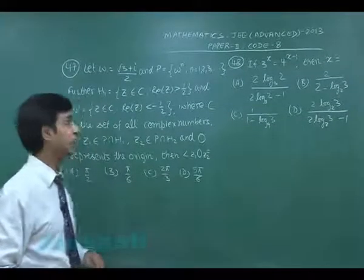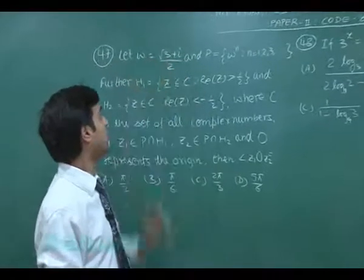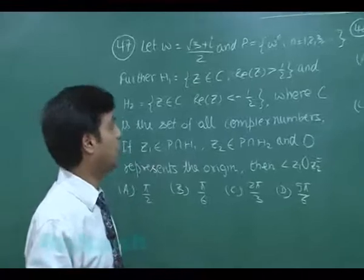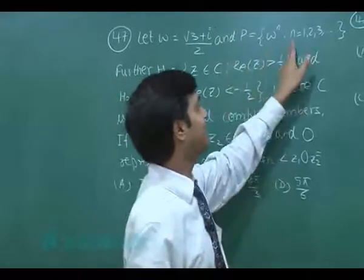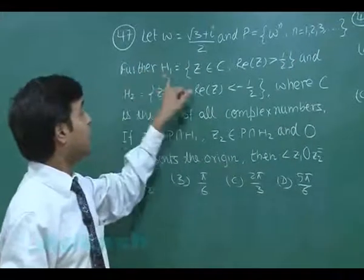Let's move to question number 47. Let omega equals root 3 plus iota upon 2, and P equals omega to the power n such that n from 1, 2, 3, 4, and so on. Further, H1 equals